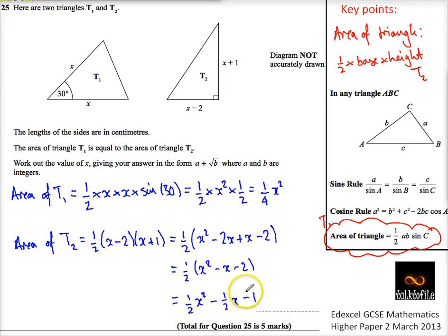That gives us a half x squared minus a half x minus 1. So that's the area of T1 and T2. So I'm just going to go onto a new page. Give me just a second to pause the video, and then I need more space to carry on. Okay, so I've just got myself ready, and I'm just going to carry on over the page.